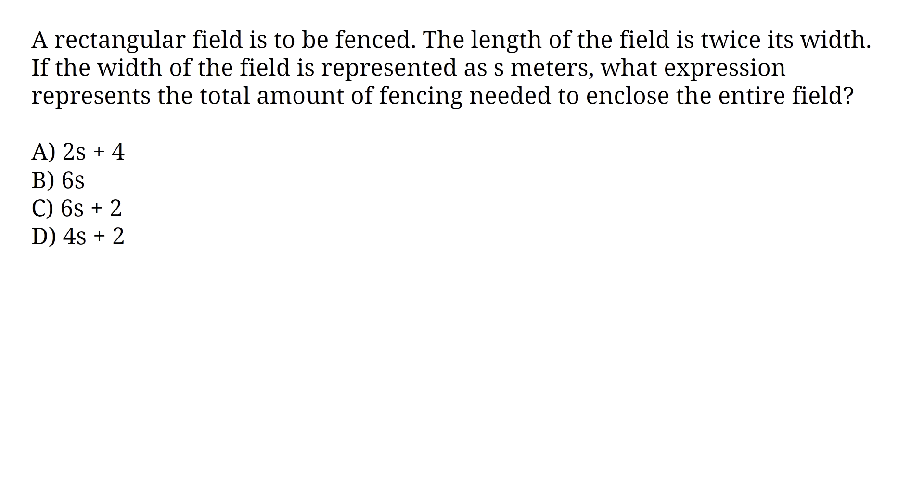A rectangular field is to be fenced. The length of the field is twice its width. If the width of the field is represented as s meters, what expression represents the total amount of fencing needed to enclose the entire field? A, 2s plus 4. B, 6s. C, 6s plus 2. D, 4s plus 2. Questions in which the answer is an expression are also common on the GED. You have to be familiar with geometry word problems that require you to find the area or perimeter.